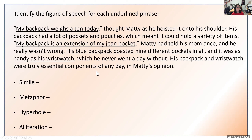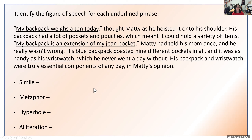'His blue backpack boasted nine different pockets in all' — if you said alliteration, you are correct. Blue, backpack, and boasted all start with the letter B — three times the letter B appears as the first letter. Our last one: 'It was as handy as his wristwatch' — right away we know this is a simile because it uses the keywords 'as.' It's comparing his backpack to his wristwatch using 'as' as the connecting word. Write 'it was as handy as his wristwatch' under simile.